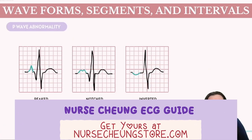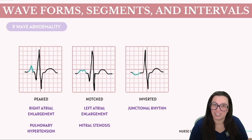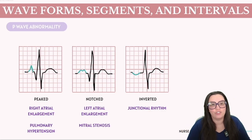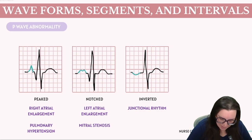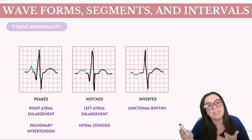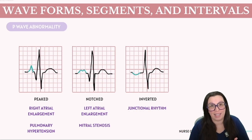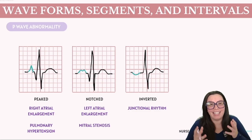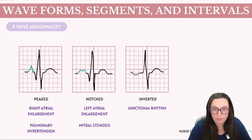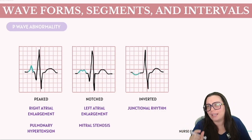P wave abnormalities — such as peaking, notching, and inversion — provide valuable insights into the atria's health and function. Peaked P waves indicate right atrial enlargement, typically resulting from conditions that impose increased pressure or strain on the right atrium, such as pulmonary hypertension. A notched or biphasic P wave can indicate left atrial enlargement, pointing to issues with the mitral valve, disease, or hypertension affecting the left side of the heart. An inverted P wave most likely indicates junctional rhythms.